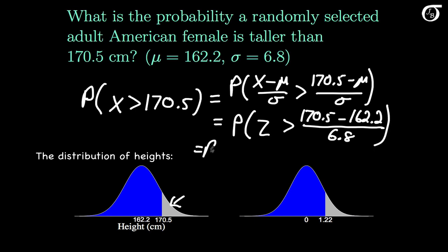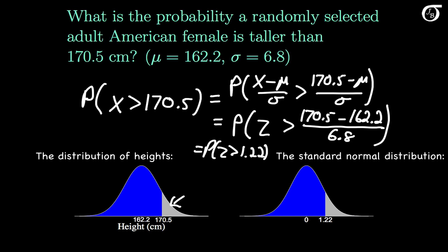This works out to the probability that the random variable Z takes on a value bigger than 1.22. Here's the standard normal distribution, and the probability that Z is greater than 1.22 is the area to the right of 1.22 under this curve. If we go to software or a standard normal table, we can find that this area is approximately 0.111. This means the area to the right of 170.5 under the original distribution is also 0.111, so the probability that a randomly selected adult American female is taller than 170.5 cm is approximately 0.111.